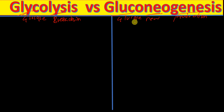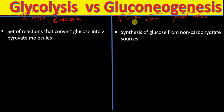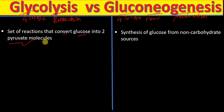The first difference is that glycolysis involves a set of reactions that convert glucose into two pyruvate molecules, whereas in gluconeogenesis there is synthesis of glucose from non-carbohydrate sources.